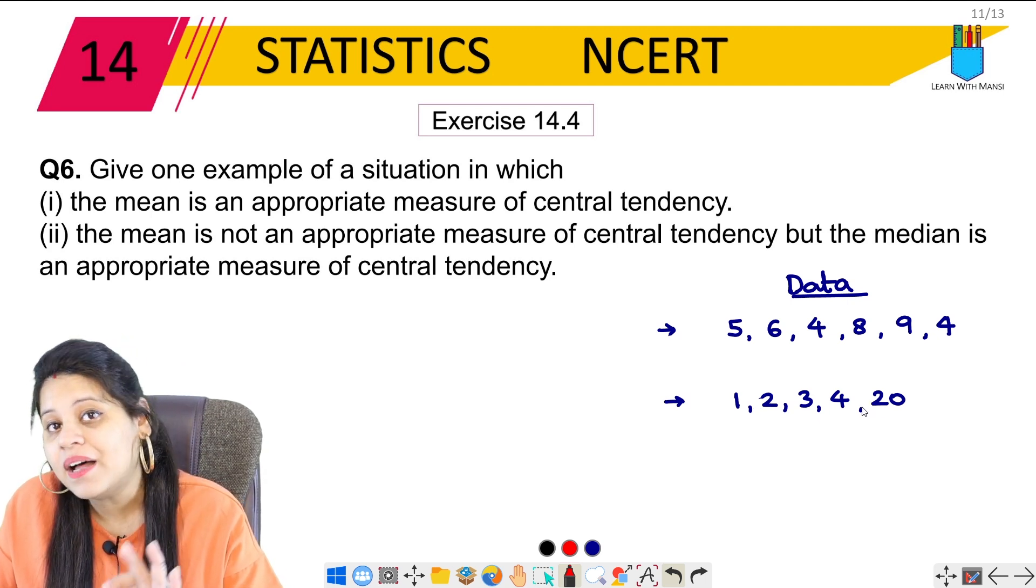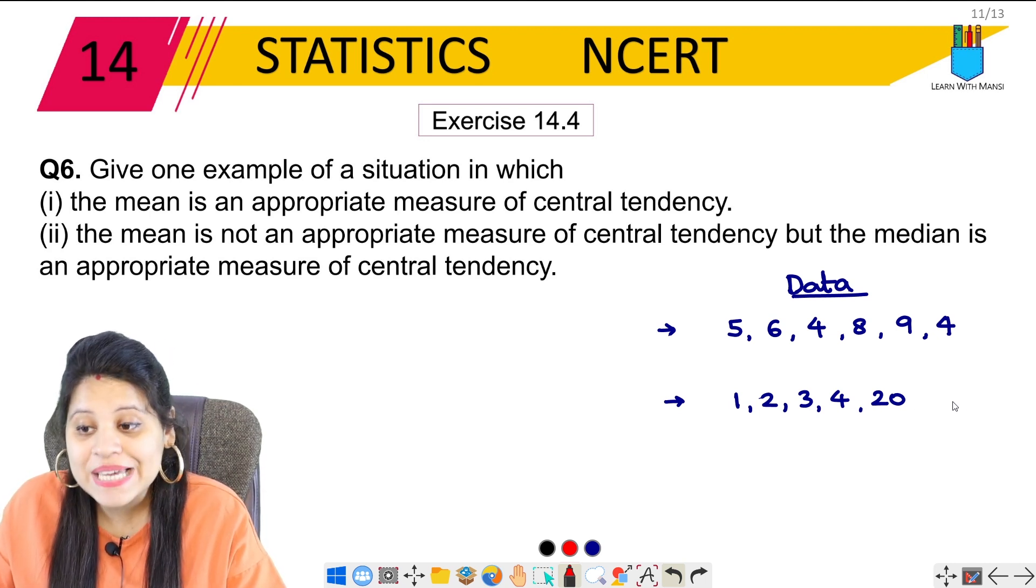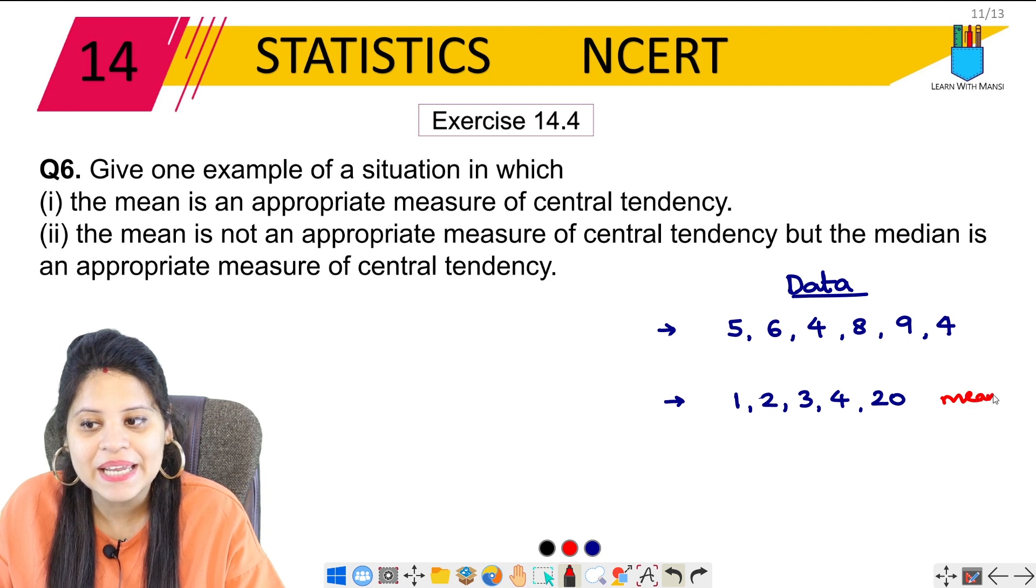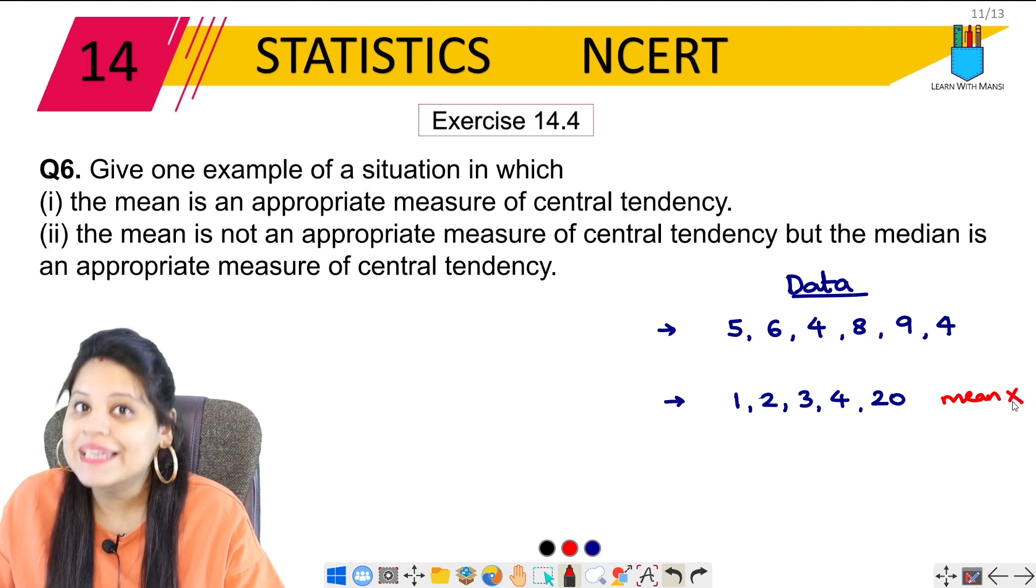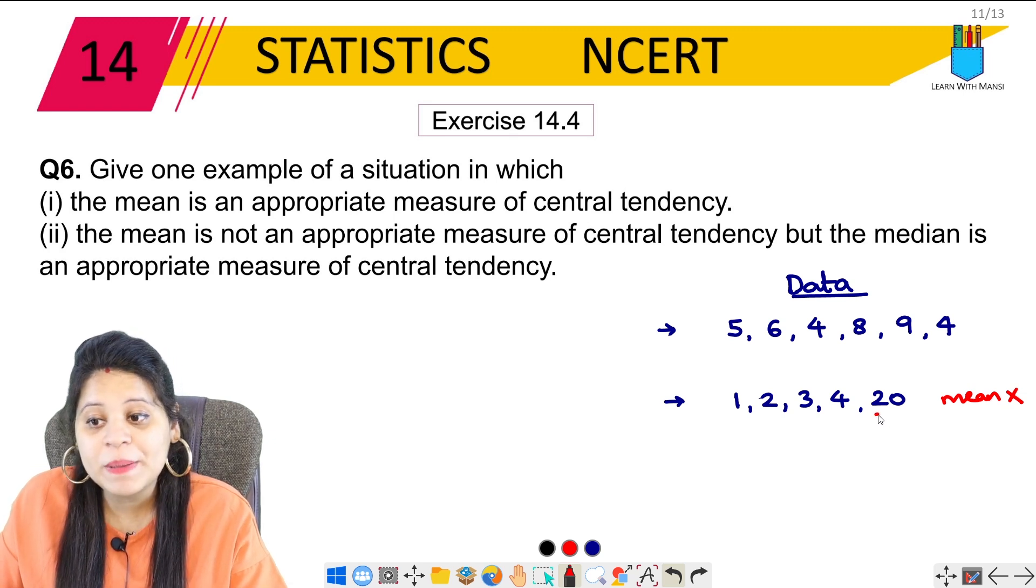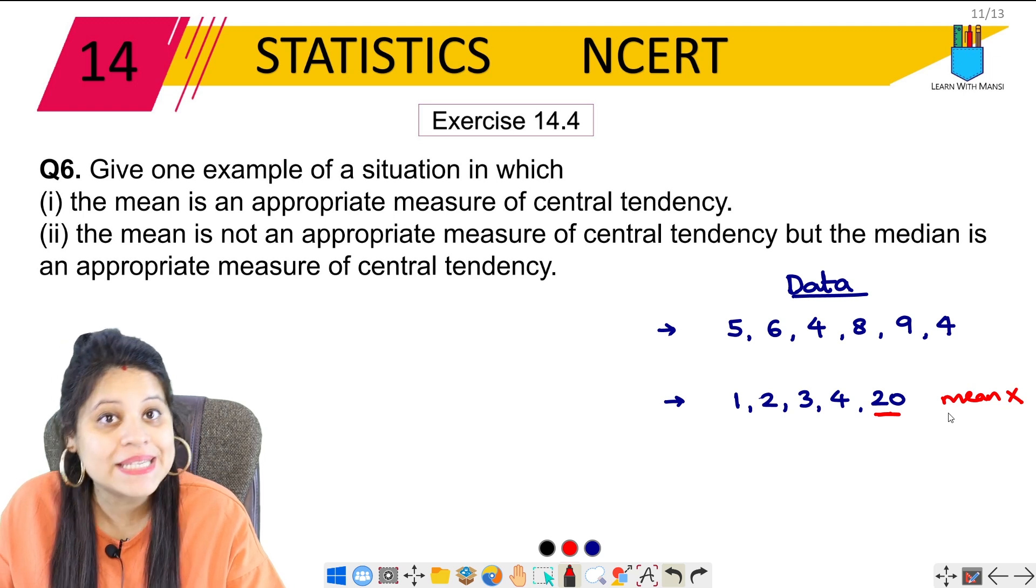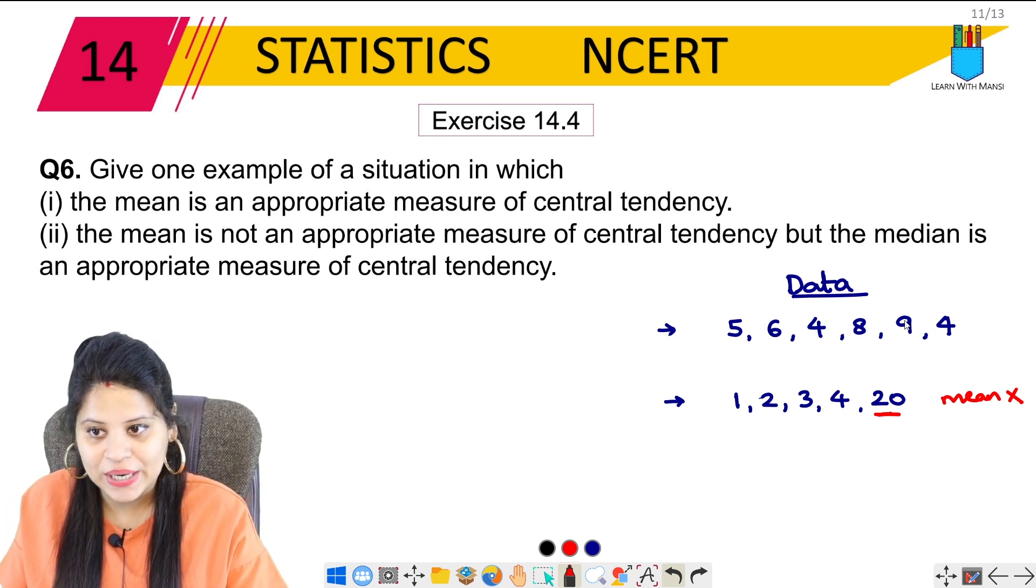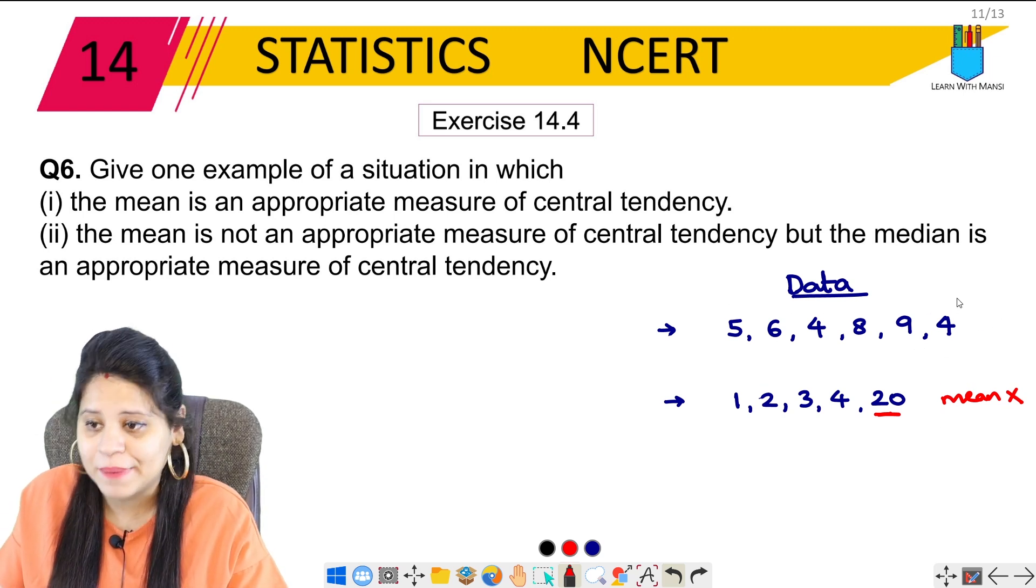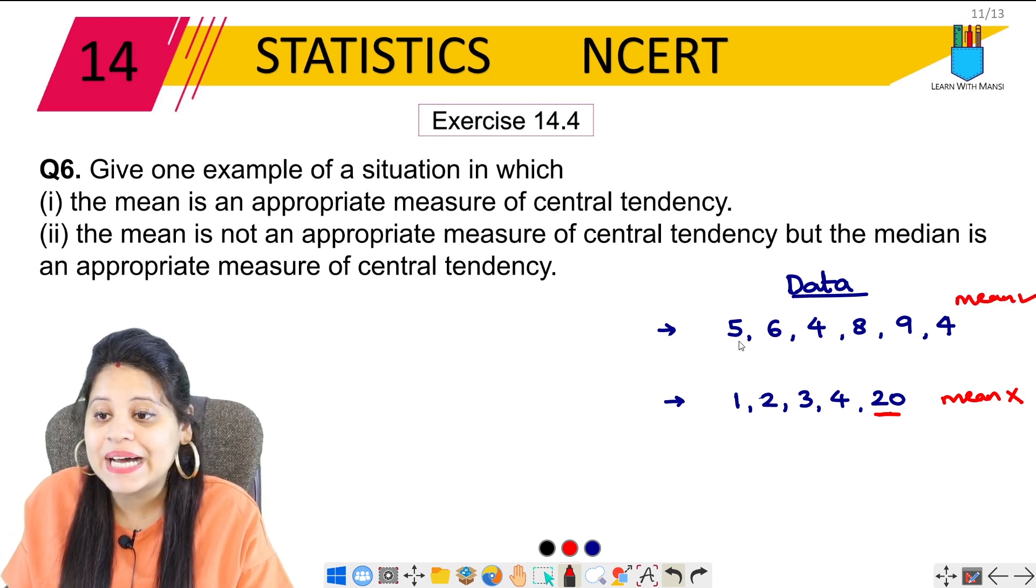In this case, when we calculate the mean, it will not be appropriate because the mean is basically average. There is a big number of 20, so the mean will not be accurate. But in the first case, there is no big gap in the data, so the mean will be appropriate.